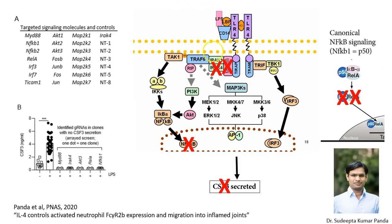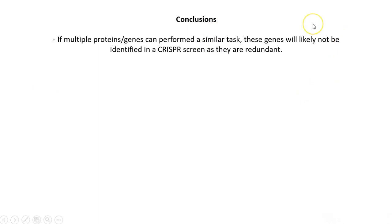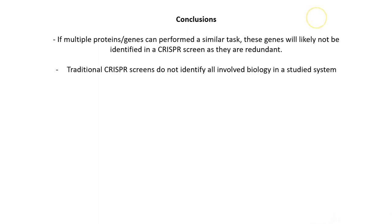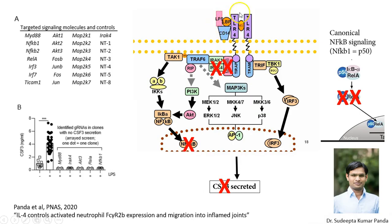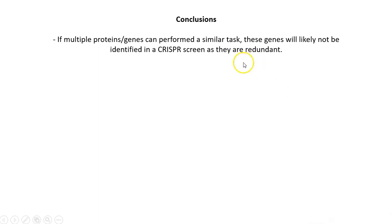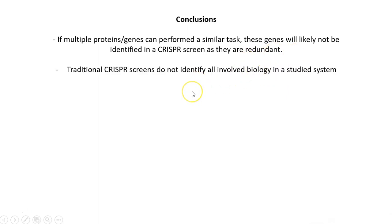So you could quite nicely identify and dissect this with a very simple experiment. The conclusion is that if multiple proteins or genes can perform a similar task, these genes will likely not be identified in a CRISPR screen — that's the redundant versus non-redundant concept. This means traditional CRISPR screens do not identify all biology in a studied system, because when you stimulate a cell all of these things are likely firing, but you'll only find the ones that are not redundant.